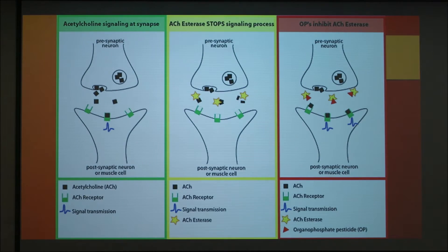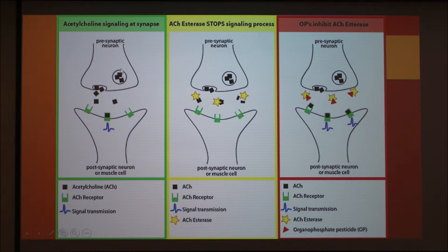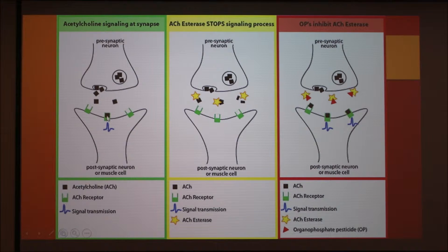As I mentioned, malathion is an organophosphate insecticide. This picture here is going to help us understand what an organophosphate does. If you look to the left in the green, we have the normal acetylcholine signaling at a synapse. We have our presynaptic neuron, our postsynaptic neuron, and this is our synapse between the two. Acetylcholine — these black boxes — are going to be released from the first neuron and bind to their receptor on the second neuron after they cross the synapse. When they bind to the receptor, we get a signal transmitted, represented here by this blue squiggle line, which would be something such as the contraction of a muscle.